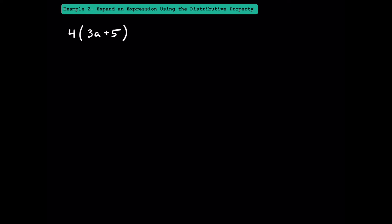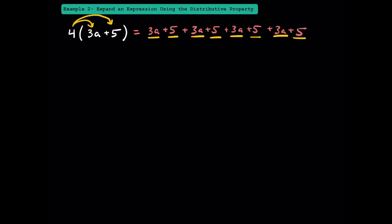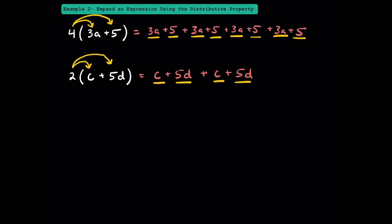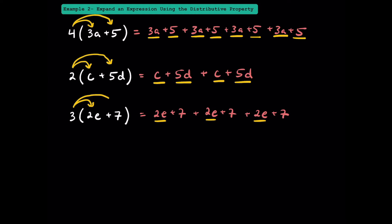In example 2, we're going to practice expanding expressions. For 4 times the quantity 3a plus 5, we have 4 of these 3a's — giving us 12a — and 4 of these 5s, giving us 20. For 2 times c plus 5d, we have 2 c's and 2 of these 5d's. For 3 times the quantity 2e plus 7, we have 3 of these 2e's and 3 of these 7s. That's how you expand expressions using the distributive property.